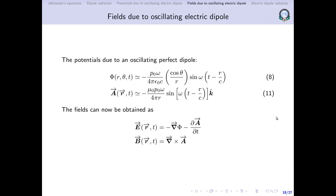Welcome back to the second part of this lecture on electric dipole radiation. In the previous part, we had assumed an oscillating electric dipole and using the retarded potentials, we found the potentials under three approximations: considering the dipole to be extremely small and looking at distances very far away from the dipole — a perfect dipole approximation. We found the scalar potential and vector potential.